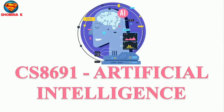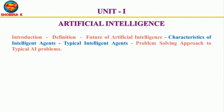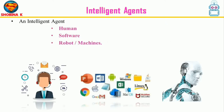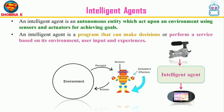Hello everyone, welcome back with another video on artificial intelligence. This video is all about intelligent agents and their environments. Intelligent agents can be any entity or object like human beings, software and machines. These agents can make decisions based on the input from the environment using its sensors and act on the environment using actuators.